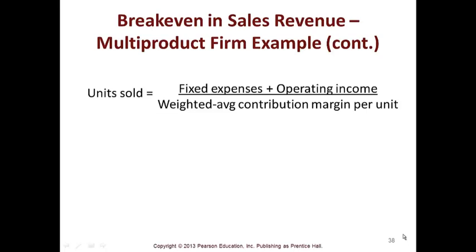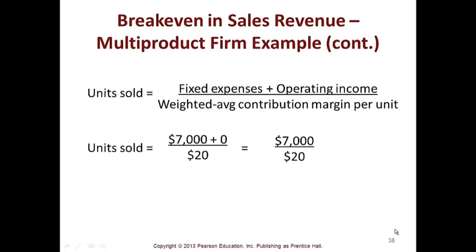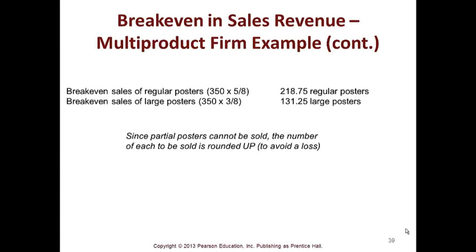For the multi-product break-even, it's the same formula, only using the weighted average contribution margin. With the same $7,000 fixed cost divided by the $20 weighted average contribution margin, you get 350 posters. Break-even sales is then 350 times the sales price for each product line, giving you the different dollar amounts for each.